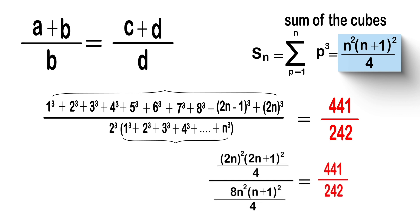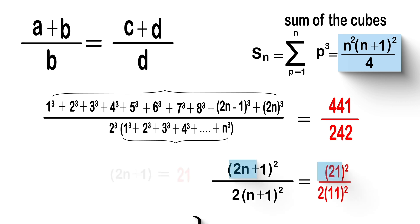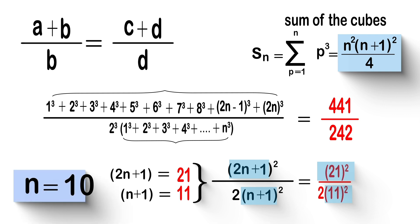From this, we can write the following fraction for the left-hand side of the equation. After simplifications and reductions, we can write two equations for n. When we solve for n, 10 will be the solution.